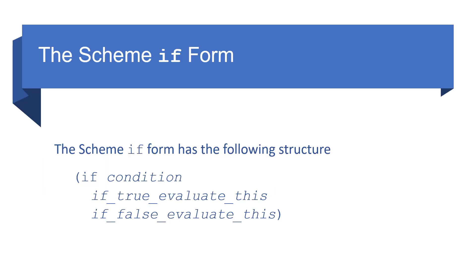So the if form has this structure where we say if, then we give it a boolean condition, and then we have two forms after that. The first form we evaluate if the condition is true. The second form we evaluate only if the condition is false. So you can think of this as if-then and else, and just like in if-else we have two conditions.